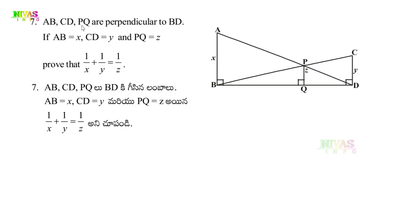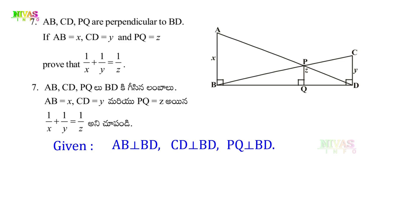Question number 7. AB, CD, PQ are perpendicular to BD. If AB equals X, CD equals Y, and PQ equals Z, prove that 1 by X plus 1 by Y equals 1 by Z. First of all, we have a picture with multiple triangles and given points. AB equals X, PQ equals Z, and CD equals Y. So write down AB equals X, CD equals Y, and PQ equals Z.